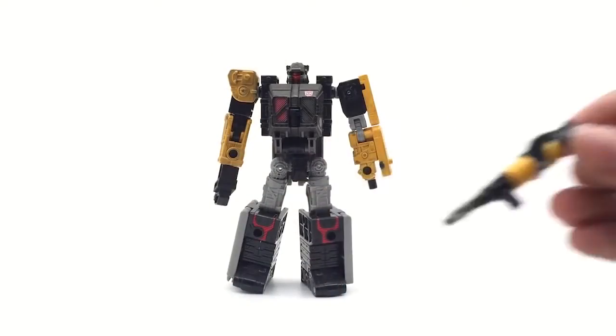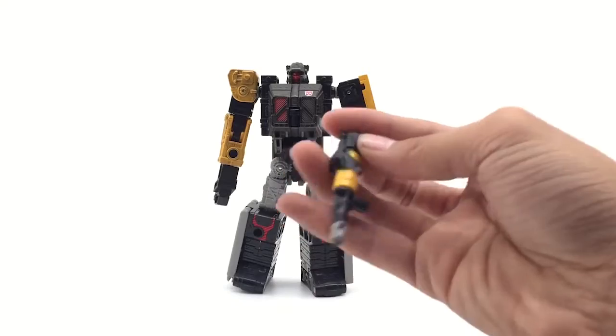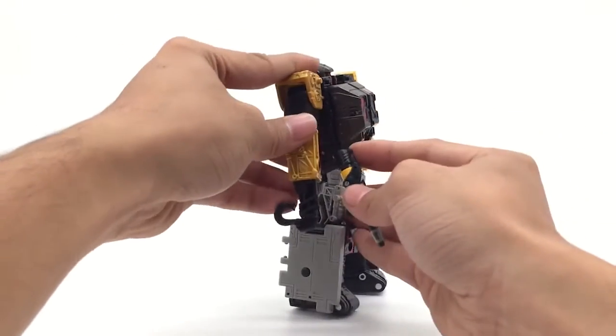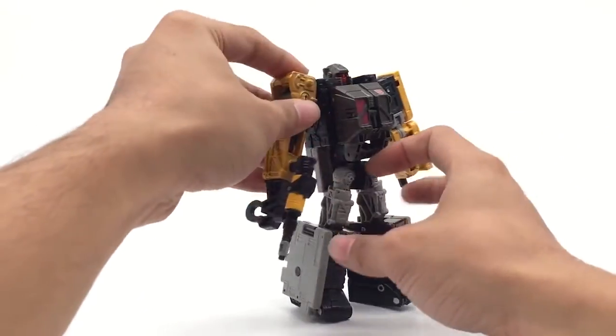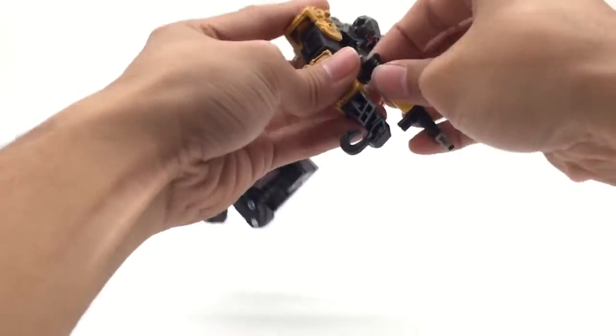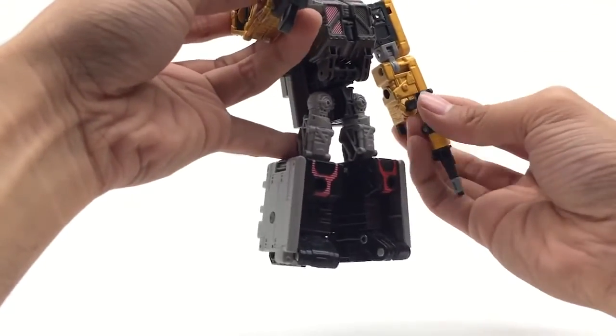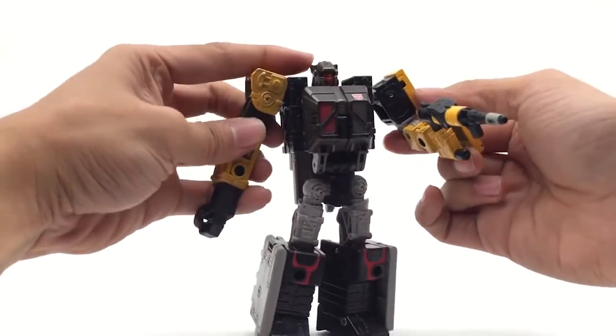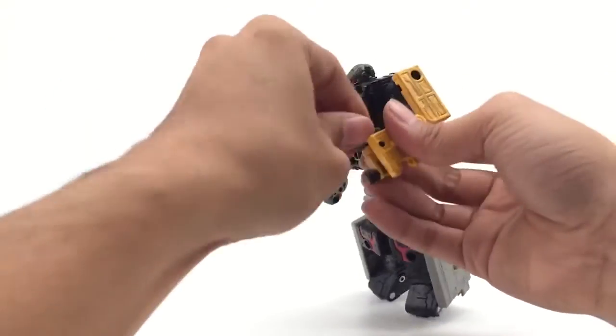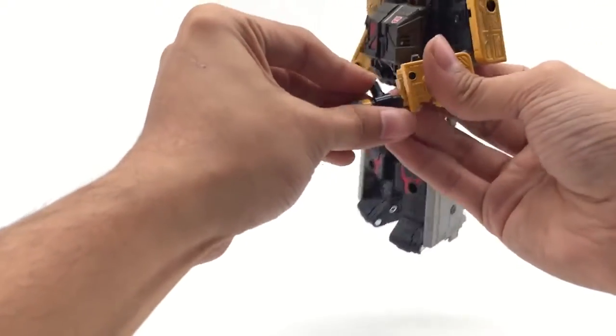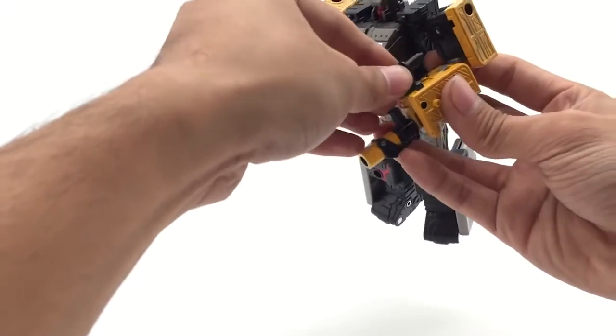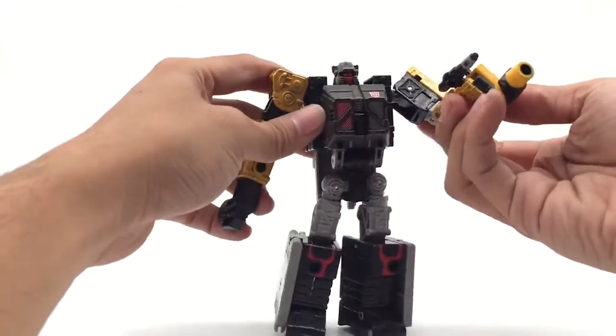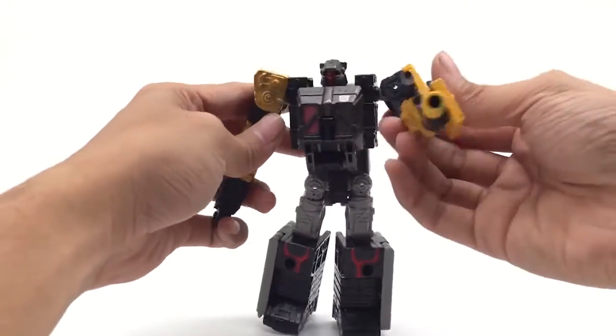And he comes with a blaster which can attach on both of the hands. Standard Warpaw Cybertron. There we go, like that. And it can detach and you can hold it in a different way. Pretty nice.